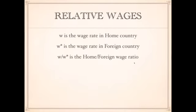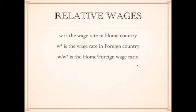As you remember, we use W to distinguish what wages are. W is the wage in the home country, and W asterisk is the wage in the foreign country. Dividing W by W asterisk, we get the home/foreign wage ratio.